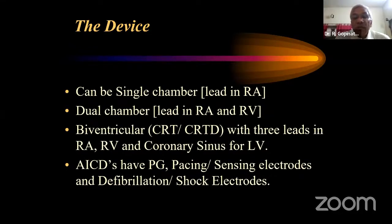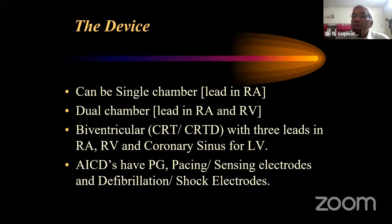In biventricular devices — used for cardiac resynchronization therapy — there are three leads: one in the right atrium, one in the right ventricle, and one in the coronary sinus to stimulate the left ventricle. We cannot pierce the interventricular septum, so through the right atrium we enter the coronary sinus and advance the lead as far inside as possible to stimulate the left ventricle. In ICD devices, you have a pulse generator with pacing, sensing, and defibrillation shock electrodes.